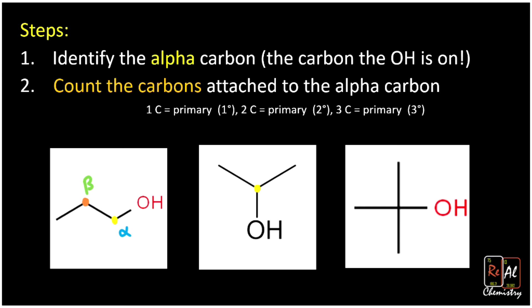Comparing to the next alcohol: our alpha carbon is bonded to two other carbons, making it a secondary alcohol. In the last case, the alpha carbon is connected to three other carbons, making it a tertiary alcohol. So: one carbon attached means primary, two carbons means secondary, and three carbons means tertiary. That's how we categorize alcohols as primary, secondary, or tertiary.